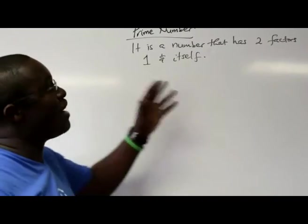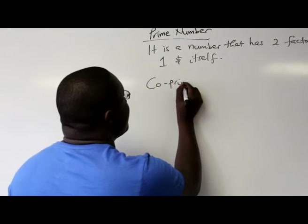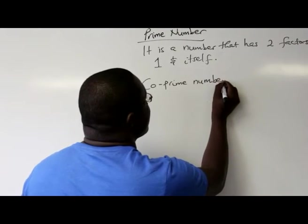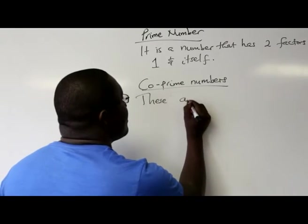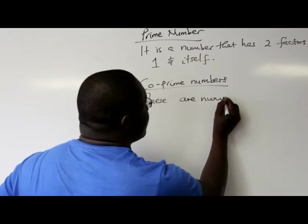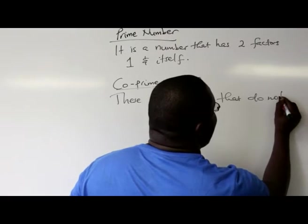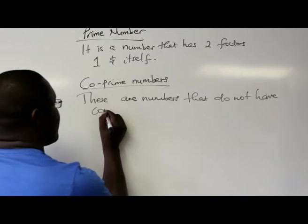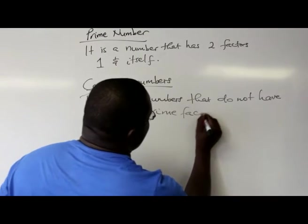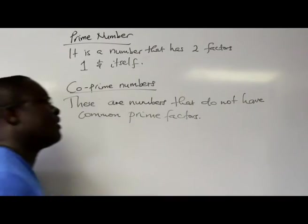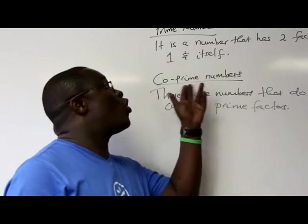So when we say co-prime numbers, these are numbers that do not have common prime factors. If two numbers have no common prime factors, that means that they are co-prime numbers.